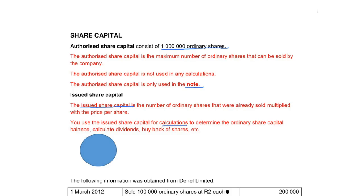You use the issued share capital for calculations. So if you have to determine what your ordinary share capital balance is, you will take the issued shares and multiply it with the price per share. If you have to calculate dividends, you will use the number of issued shares to multiply with the dividends to determine the amount that must be paid. If there is a buyback of shares, you will also use the issued share capital to do those calculations.